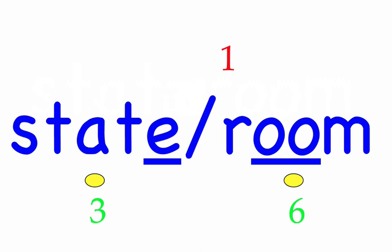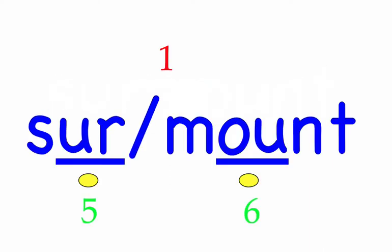Surmount. We will surmount each difficulty as it arises. First syllable: sur, two sounds, S-ur. Second syllable: mount, four sounds, M-ow-N-T. Surmount — mark the word.